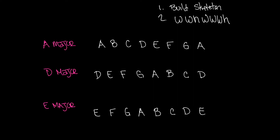Let's build A major together. A to B — is that a whole step? Yes, so we put a tick mark. B to C — is that a whole step? No, so we put a sharp on C. B to C sharp is a whole step. Now C sharp to D — is that a half step? Yes it is, so that's correct.